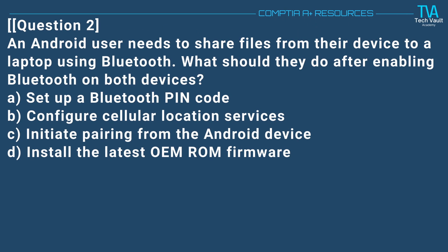Question 2. An Android user needs to share files from their device to a laptop using Bluetooth. What should they do after enabling Bluetooth on both devices? A. Set up a Bluetooth pin code. B. Configure cellular location services. C. Initiate pairing from the Android device. D. Install the latest OEM ROM firmware.